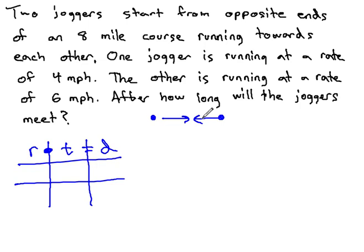One jogger is running at a rate of 4 miles per hour. Let's put that in our table. The first jogger runs at a rate of 4 miles per hour. The other running at a rate of 6 miles per hour. Let's put that in our table. The second rate is 6 miles per hour.